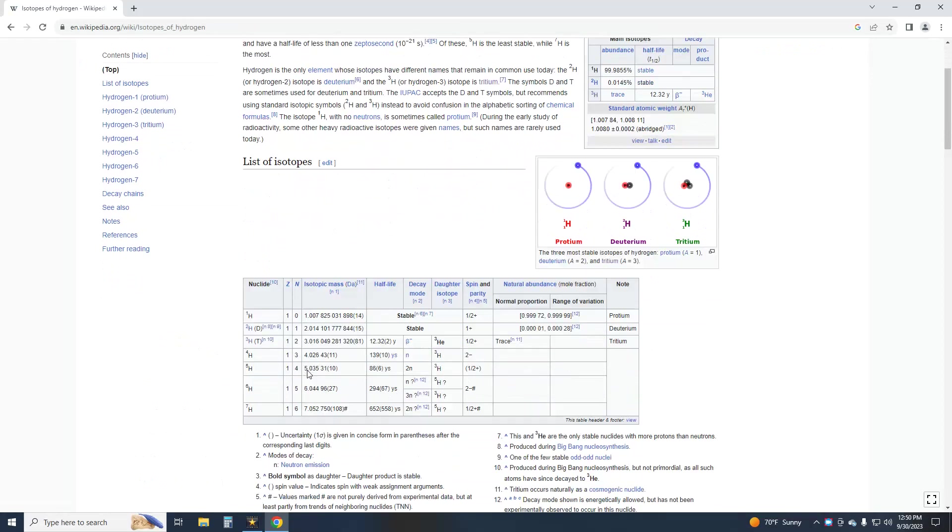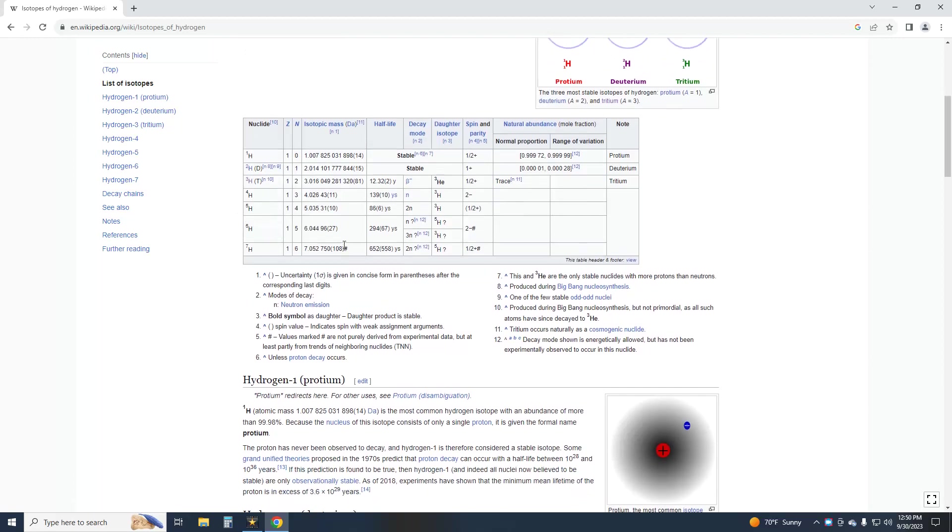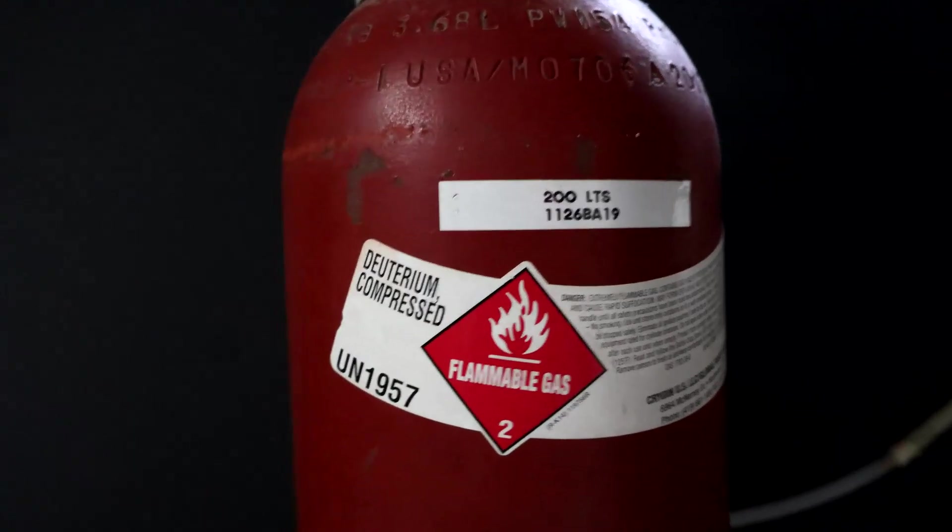Out of the seven isotopes of hydrogen, Tritium has the longest half-life at 12.3 years. The lighter deuterium and hydrogen are considered stable.